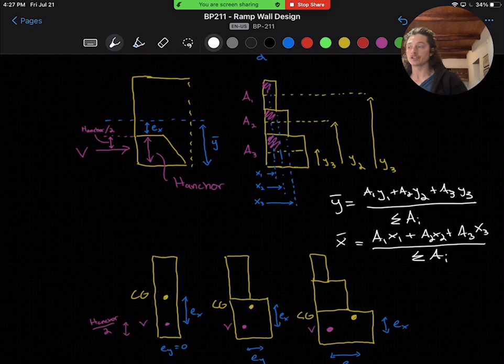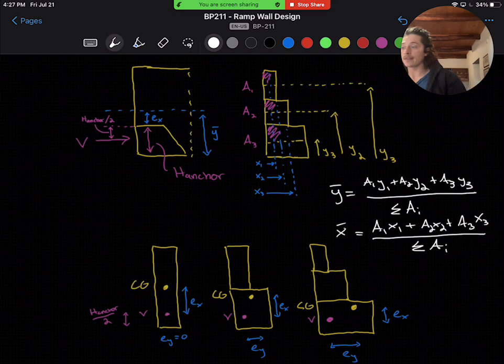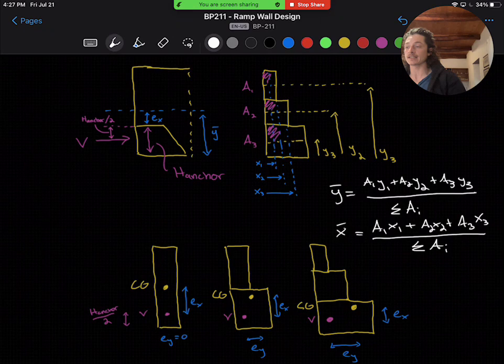And then our eccentricities are going to be based on this value. So we can assume the load acts at half the anchor height, and is evenly distributed along the 30 centimeters of wall bearing on the anchor. So the strong axis eccentricity is going to be Y bar minus half the anchor height, as you can see here. And the weak axis eccentricity depends on the wall thickness, and will be X bar minus 15 centimeters at the center of the minimum bearing.